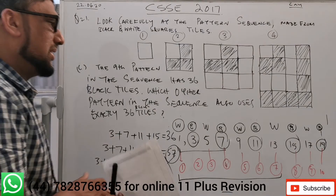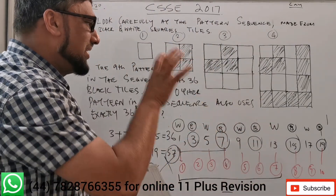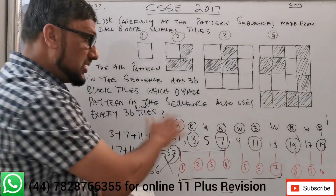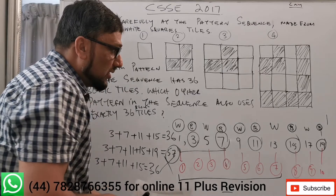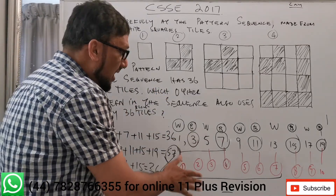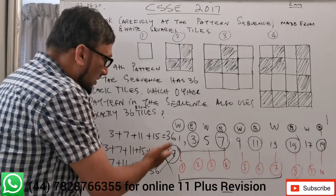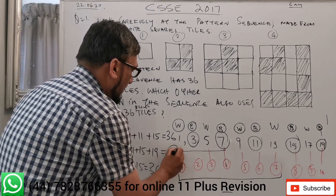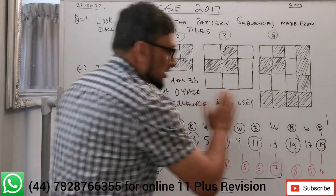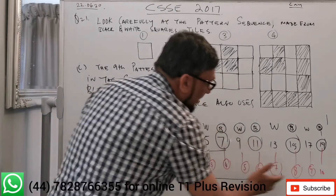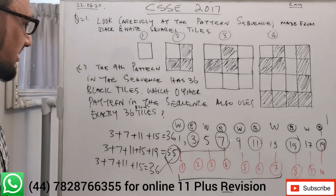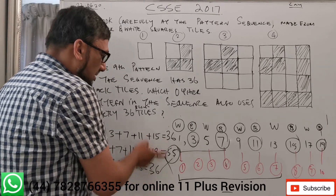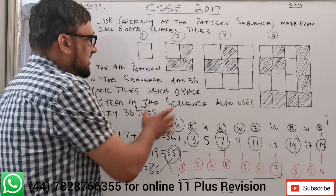So the answer is pattern number eight — not pattern ten, which gives 55 or 57. Pattern eight and pattern nine both have exactly 36 black tiles. That's the answer for part C.